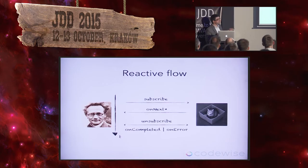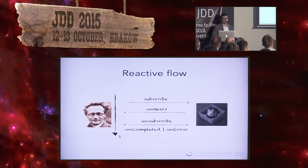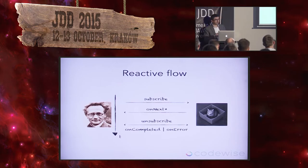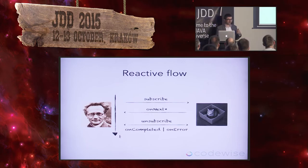We subscribe to the stream and start getting information. How do we get the information? It's called onNext. The producer has some abstraction of the client and will call onNext saying 'this is the next element.' The star here means it can produce zero up to infinite elements. If it is a database query, it may return no rows — it would never call onNext. If it's an infinite stream, it will always call onNext. But if the stream somehow finishes, we have terminal state actions and the stream is finished for the observer.